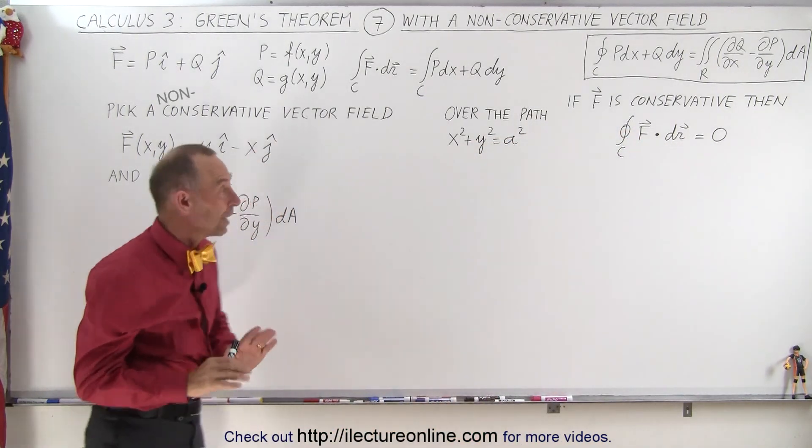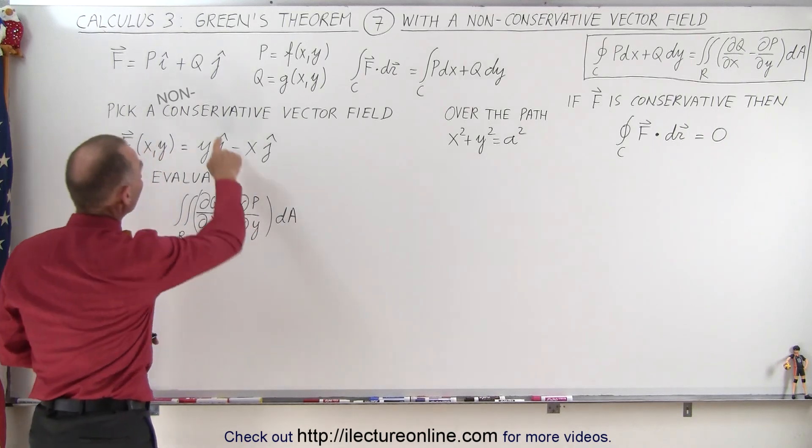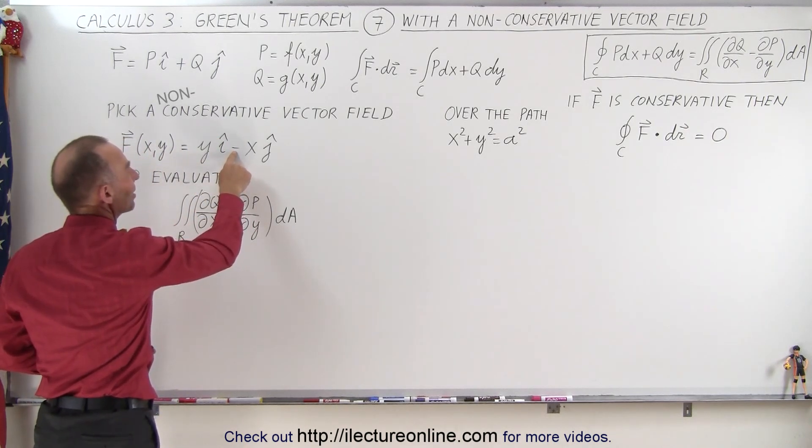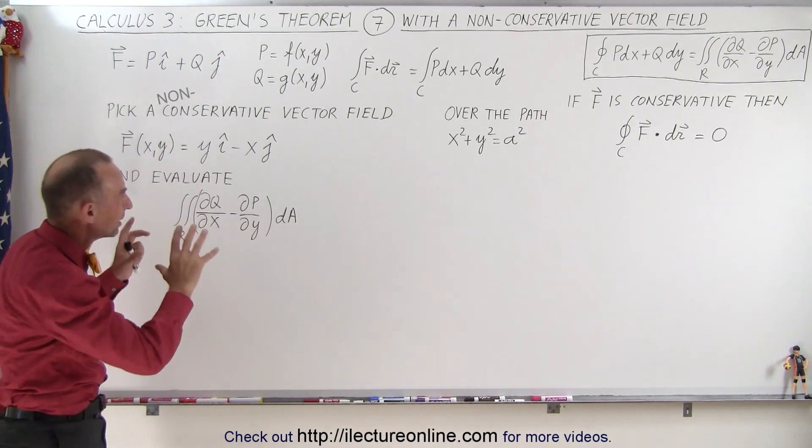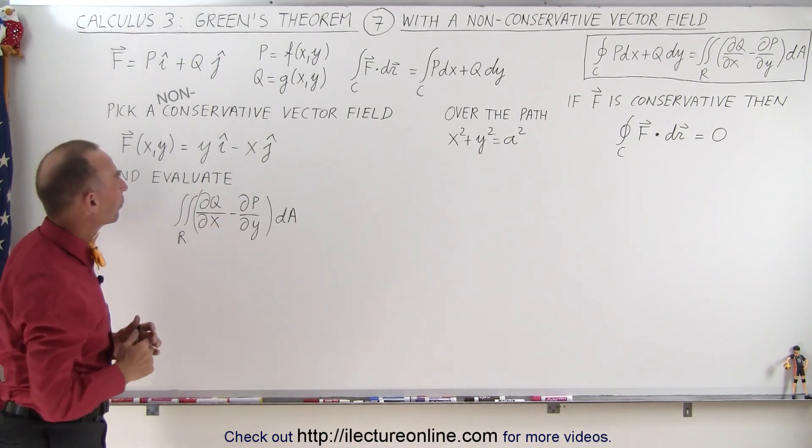We're now going to use a non-conservative vector field and we've accomplished that by taking the plus sign here and making that into a negative sign. In the next video, you'll see the difference and how that affects Green's theorem.